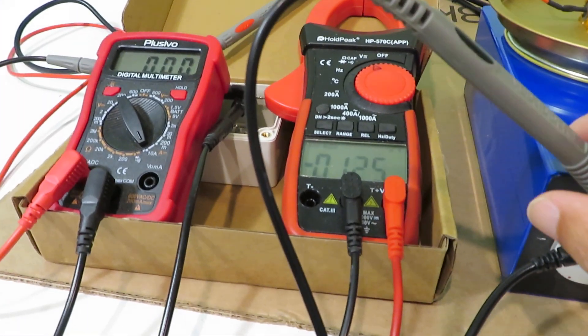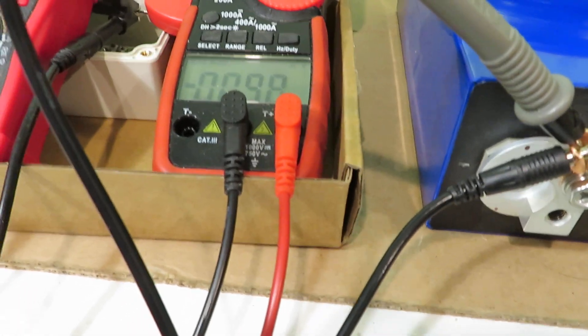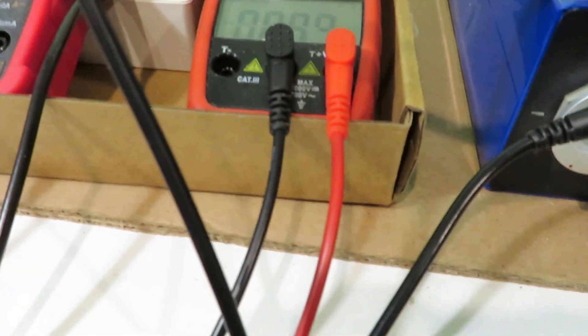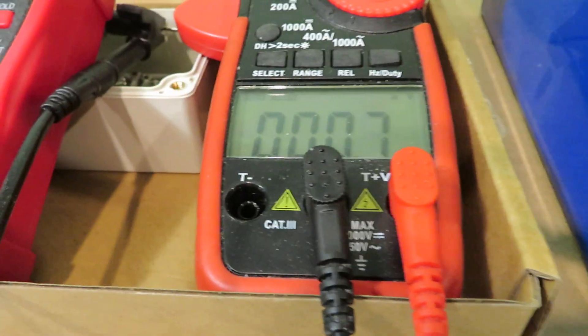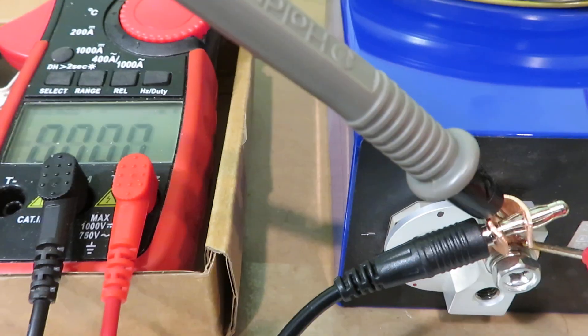Now if I measure the casing voltage against the negative - this is the negative - negative to negative, it's zero volts. So that's exactly what we expect.